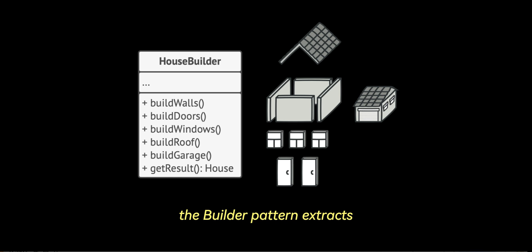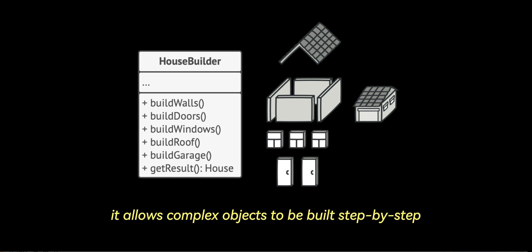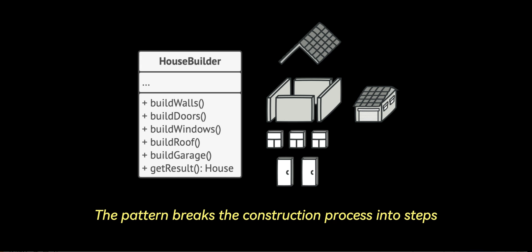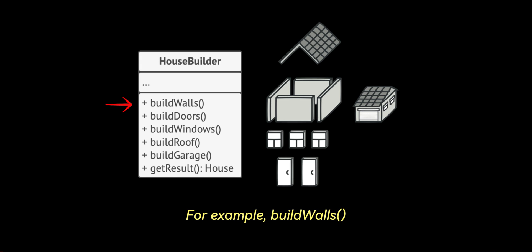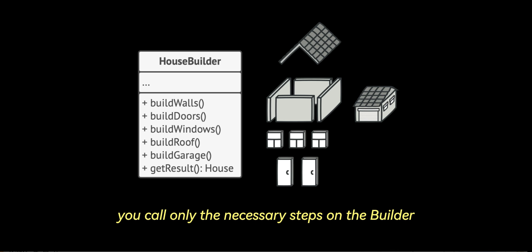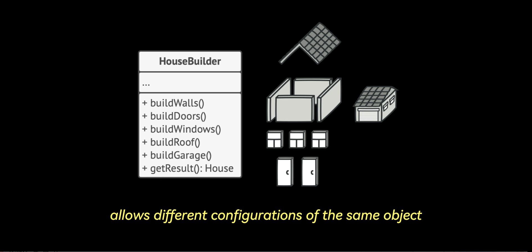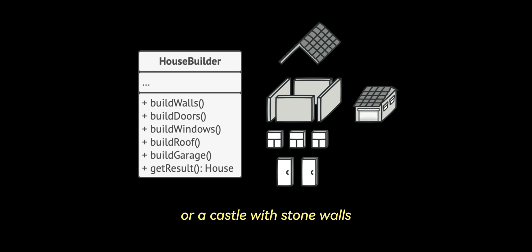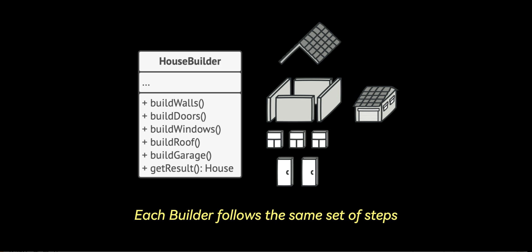The builder pattern extracts object construction code into separate objects called builders. It allows complex objects to be built step-by-step without exposing the product during the construction process. The pattern breaks the construction process into steps — for example, build walls, build door, build windows. To create an object, you call only the necessary steps on the builder. This flexibility allows different configurations of the same object without requiring all steps. For different object representations, such as a cabin with wooden walls or a castle with stone walls, you can implement various builder classes. Each builder follows the same set of steps but constructs the object differently.